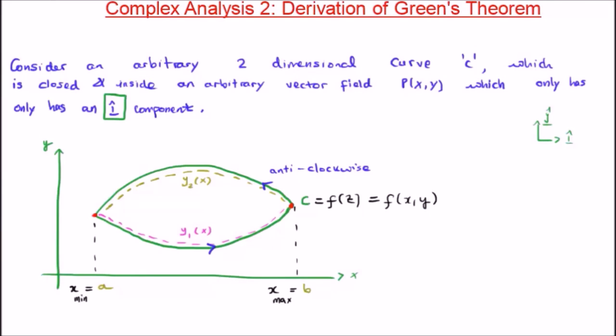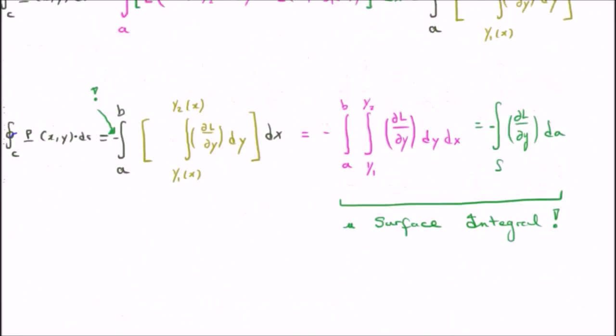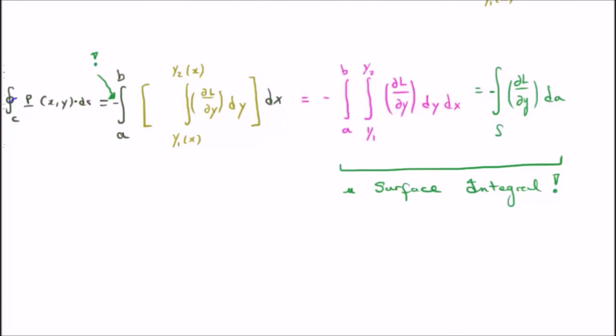To remind ourselves: we had a two-dimensional vector field which only had an i-hat component. We took an anticlockwise closed path and split it into two paths, y1(x) and y2(x). When we looked at the closed line integral, we saw that it's equivalent to a surface integral of the function ∂L/∂y.